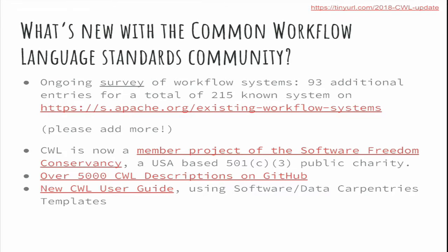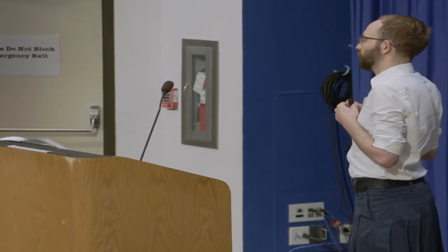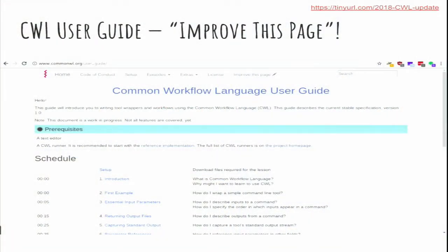In the Common Workflow Language project, we really began by centering the researcher and the user as the most important thing. To help with that, we vastly revamped our user guide following the best-in-class Software and Data Carpentry templates. That's one of the biggest things I'm proud of from the last year. If you're teaching yourself, this is the place to look — don't read the specification. And if you know a bit about CWL, the biggest feature is a link that says 'improve this page,' so please help us improve our docs. Big thanks to the Data Carpentries for all their hard work making this beautiful template.